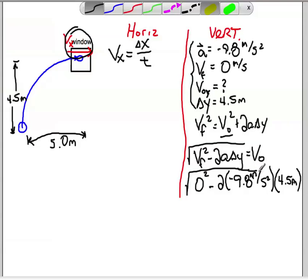Go ahead and extend that. All of that, of course, is equal to vo y. When I plug that into my calculator, I get the root of 88.2 or 9.39. So, 9.39 meters per second is going to be my initial velocity in the y dimension.